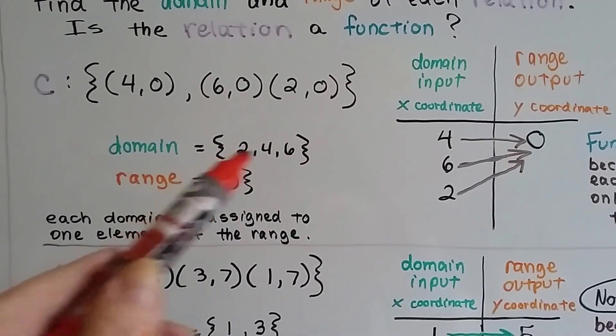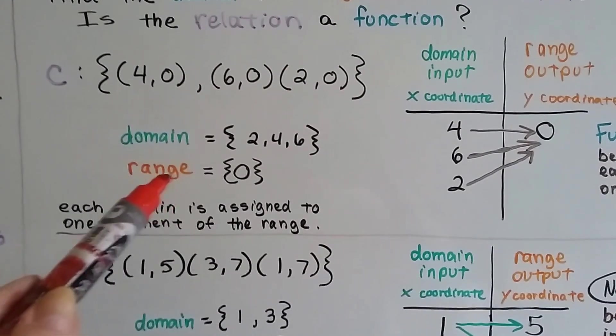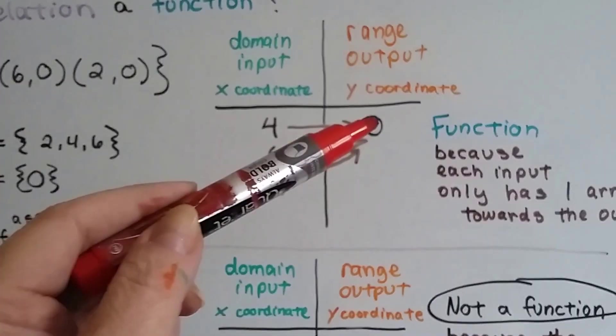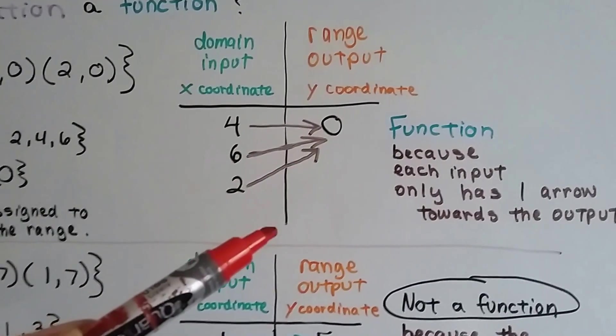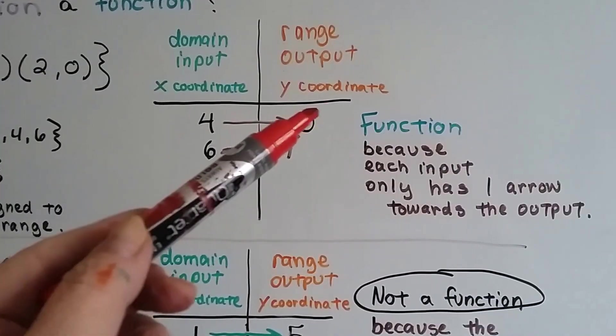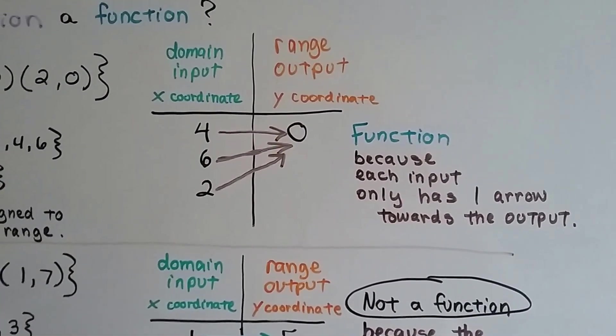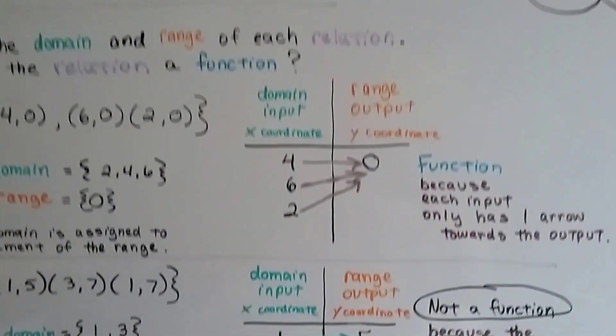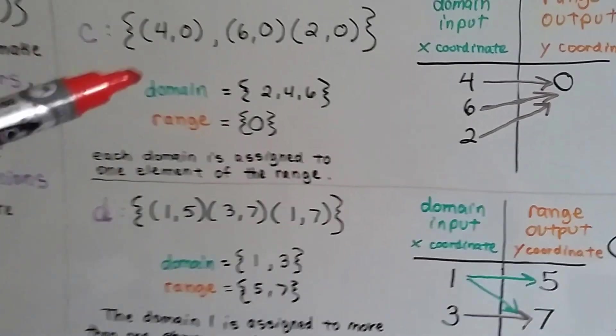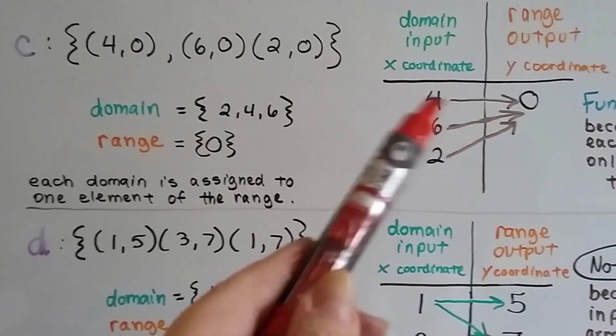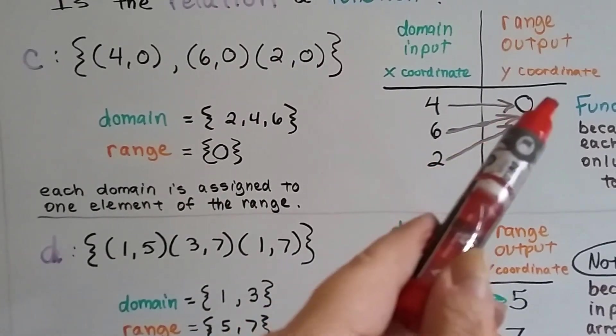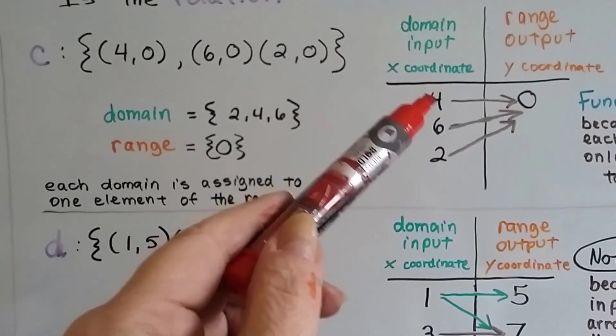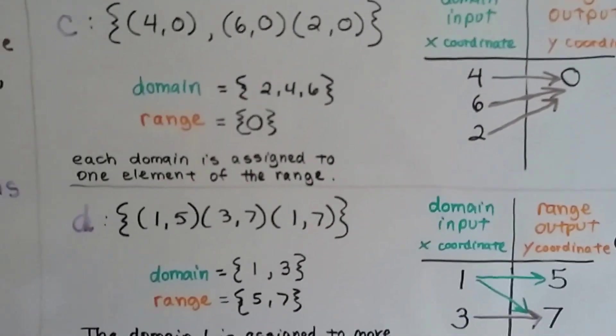So, we've got 2, 4 and 6 as our domain if we put them in order because these are not in order. And the range is 0. And each one goes towards the 0. Well, that's allowed because each input has one arrow going towards the output. It's when the input has two arrows coming out of it that we have a problem. So, in this one, each domain is assigned to one element of the range. So, that's okay. You can have these all going to the same range, the same output. You just can't have an input having two arrows going to two different places in the range.